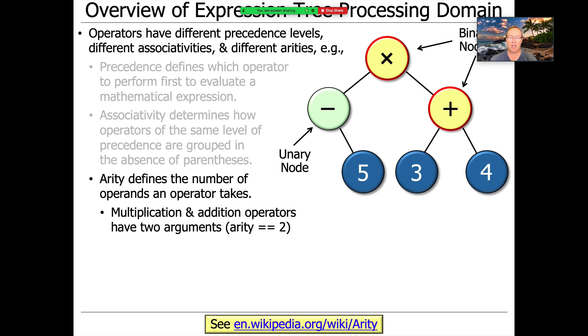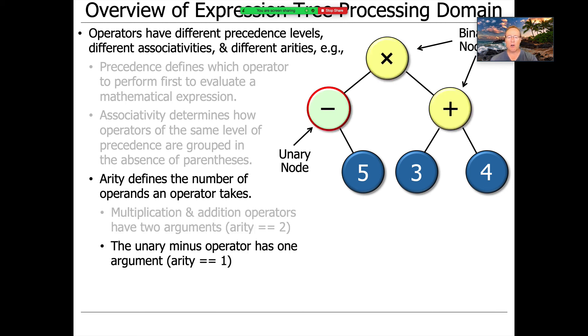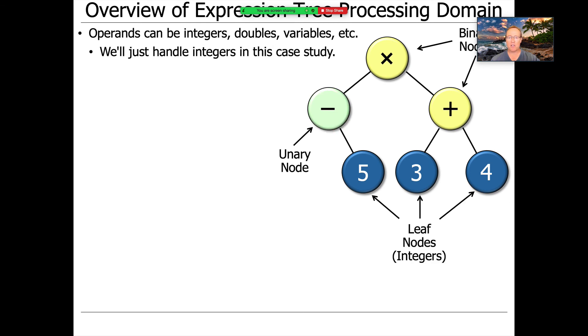So as you can see, multiplication and addition operators have two arguments. So their arity is two, they're binary operators, whereas unary minus or the negation operator has one argument. So its arity is one. And all these things figure into our domain analysis, which will then ultimately influence the way that we lay out our classes using various patterns to guide us.